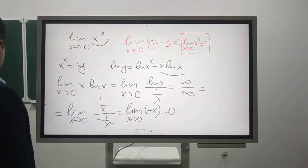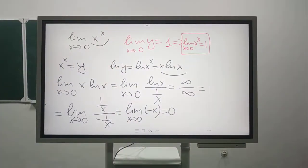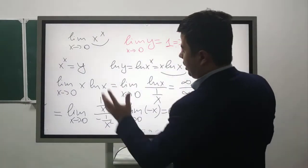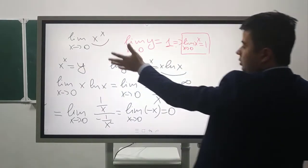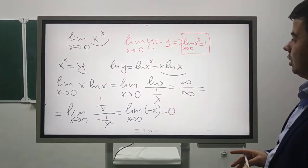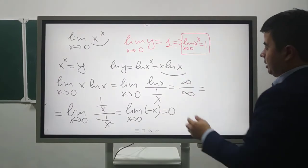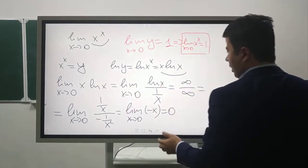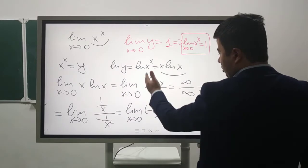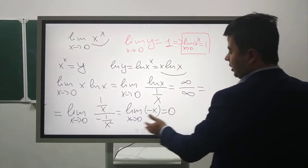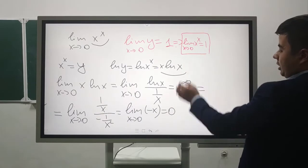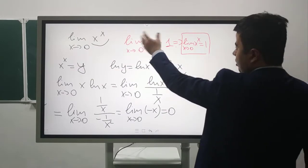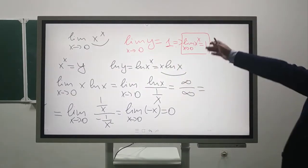In this case, we denote x^x as y for ease of notation. We use x·ln(x), put it in the limit, and provided it to the indeterminate form ∞/∞. Using L'Hôpital's rule, we get answer zero. But that is the answer of ln(y), so the limit of y is 1, and therefore the limit of our function is 1.